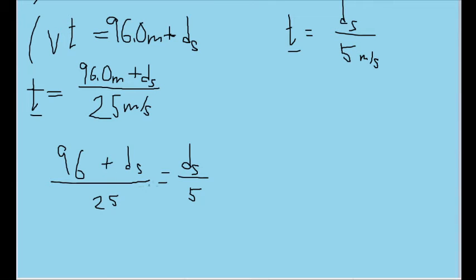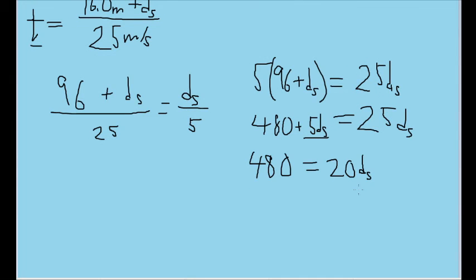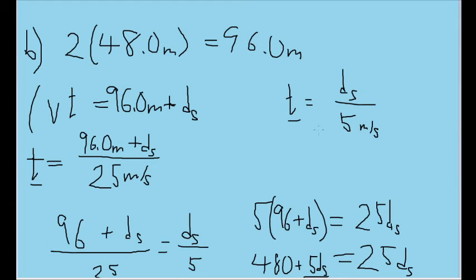We get the ds variables on their own by subtracting 5 ds from both sides, then divide both sides by 20 to get ds on its own. We see that ds is equal to 24 meters. This means the slow-moving car travels 24 meters before the fast-moving car takes its initial place. Now we can solve for the time: with ds equal to 24 meters, the time is equal to 4.8 seconds.